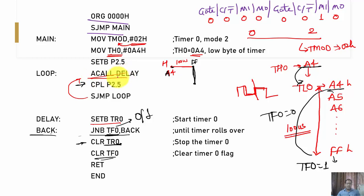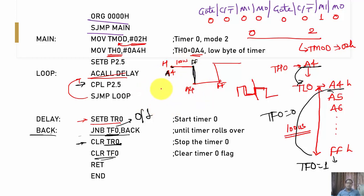After returning from the delay, toggle P2.5 from high to low (or low to high), then jump back to the loop and call delay again. Inside the delay, set TR1 (start timer), the value goes from A4h to FFh, and in this way Mode 2 operation continuously generates the required frequency.